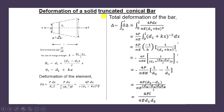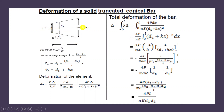What is a solid truncated conical bar? If the cross-section is a circle instead of a rectangle, then we call it a solid truncated conical bar. Let us consider a truncated tapered conical bar. At section 1 the diameter is D1 and at section 2 the diameter is D2. At any point, the cross-sectional area is a circle.